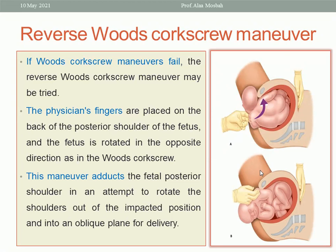If it fails, do the reverse — the Reverse Woods Screw maneuver — rotating in the reverse direction 180 degrees, as shown in the picture. This maneuver adducts the fetal posterior shoulder in an attempt to rotate the shoulder out of the impacted position and into an oblique plane for delivery.